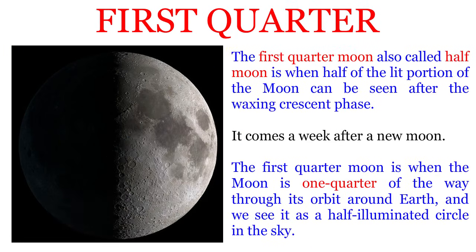The first quarter Moon, also called Half Moon, is when half of the lit portion of the Moon can be seen after the waxing crescent phase. It comes a week after a New Moon. The first quarter Moon is when the Moon is one quarter of the way through its orbit around Earth, and we see it as a half illuminated circle in the sky.